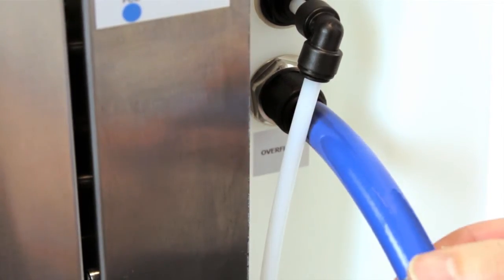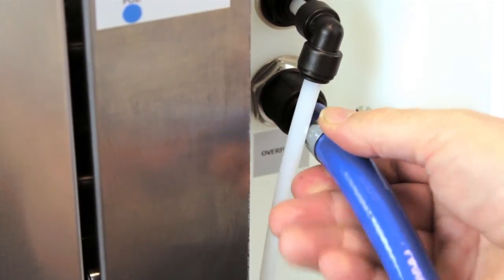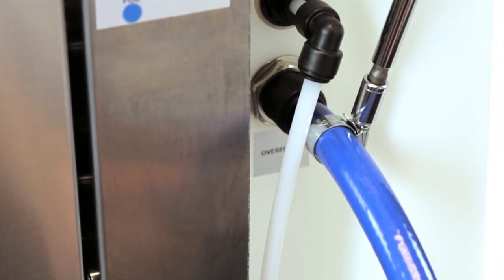Fit the 12mm hose to the overflow tank and secure using the hose clamp and run to your drain outlet.